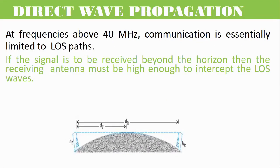Because of the line-of-sight nature of propagation, direct waves get blocked at some point by the curvature of the Earth. If the signal is to be received beyond the horizon, then the receiving antenna must be high enough to intercept the line-of-sight waves.